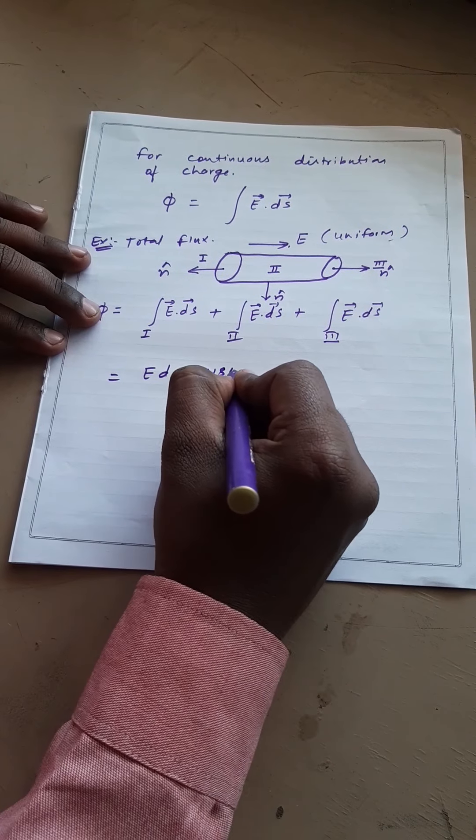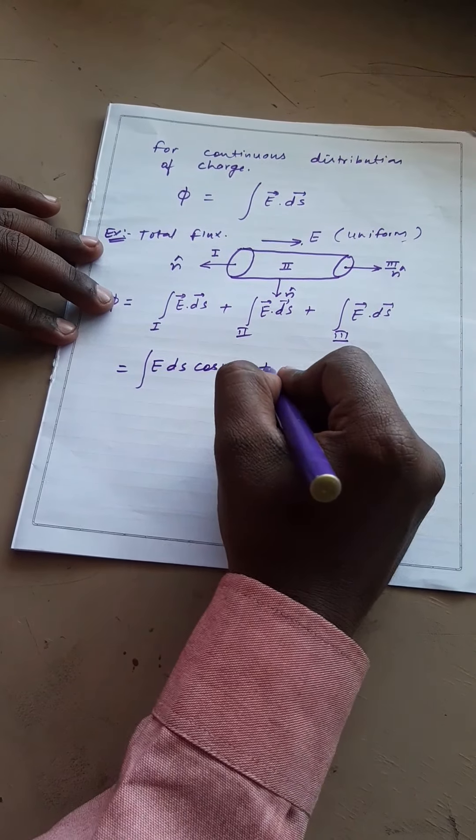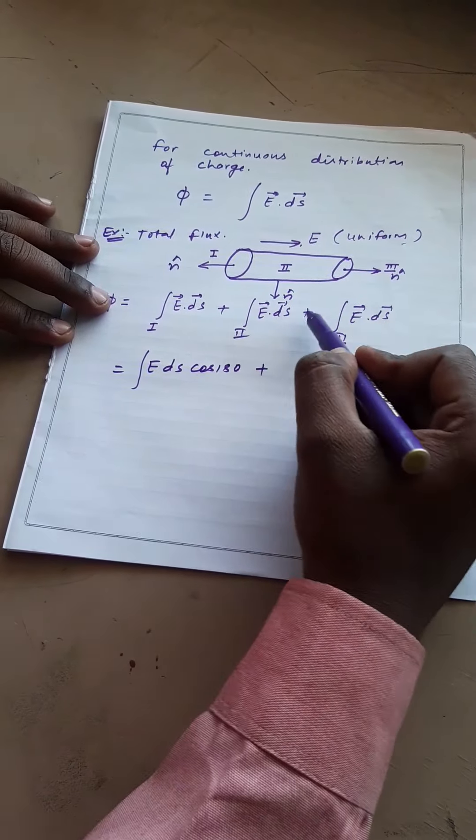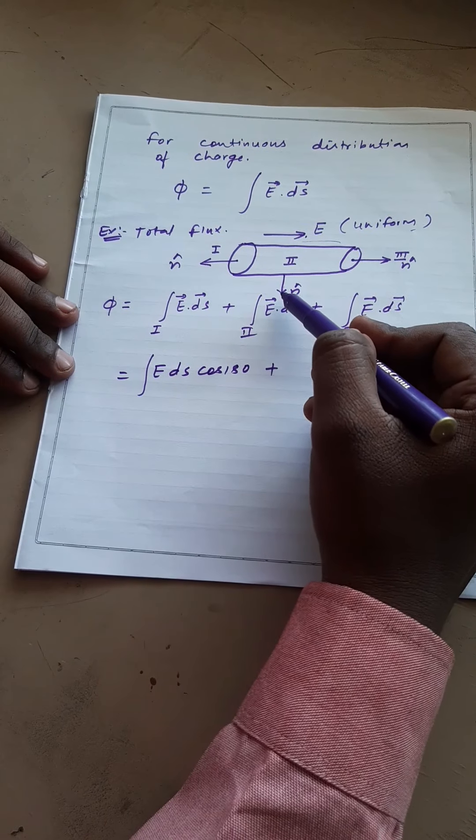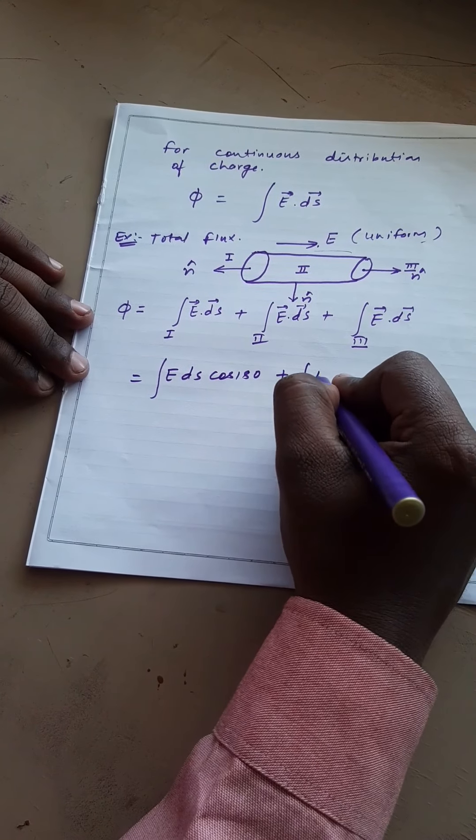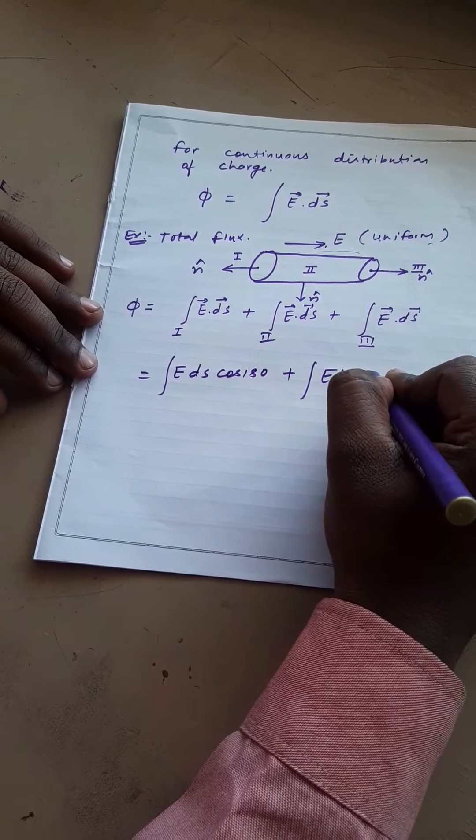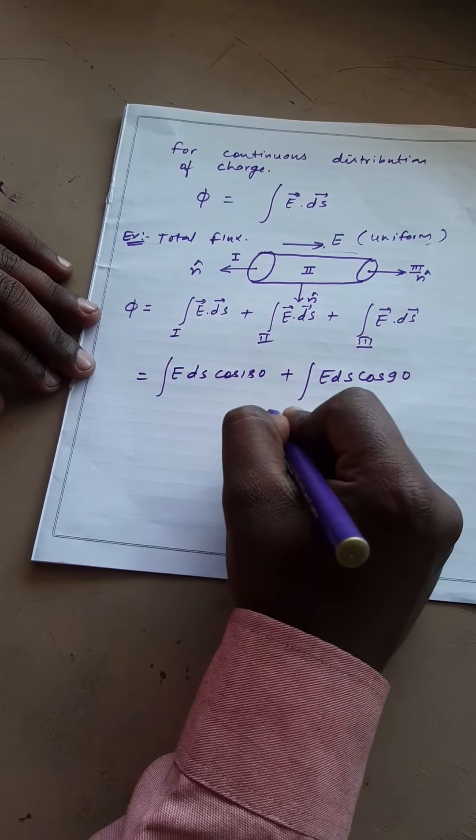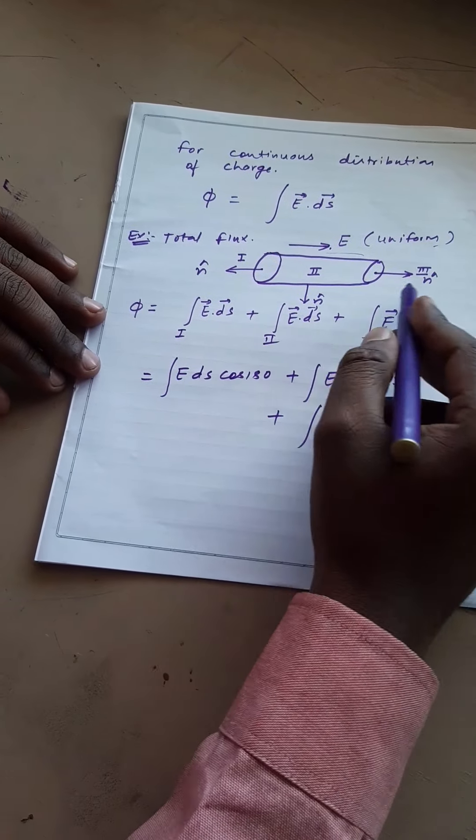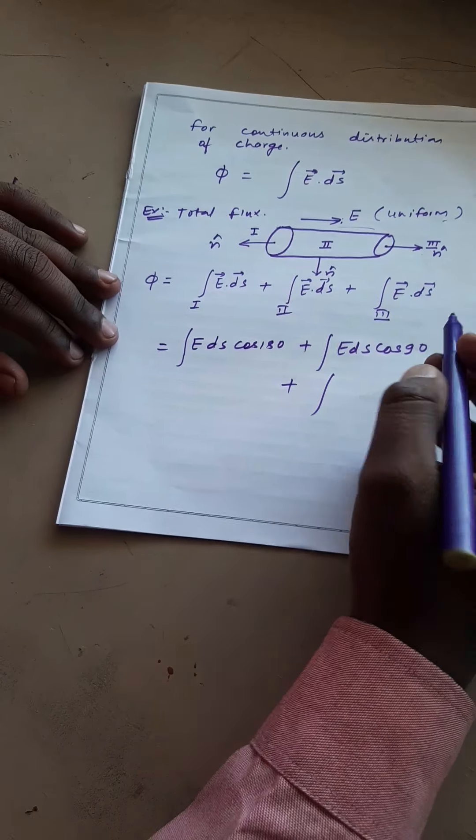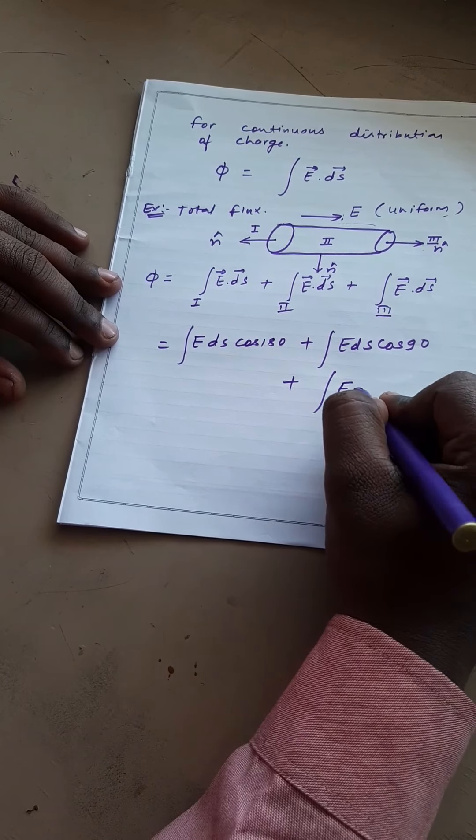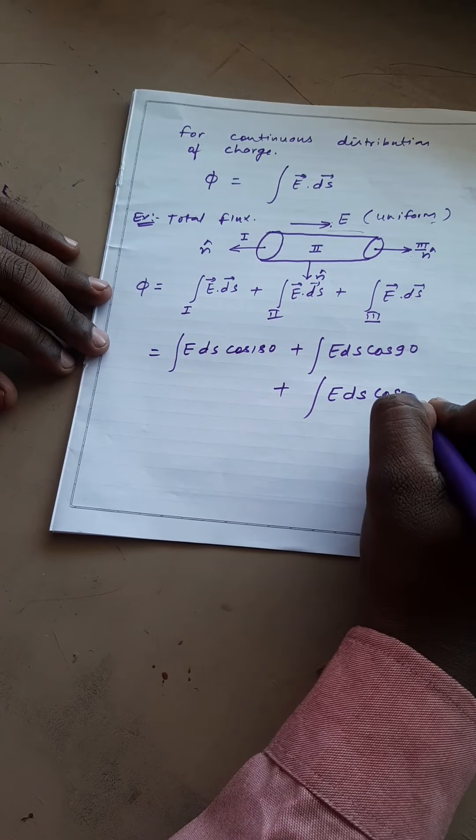second region electric field and normal vector are mutually perpendicular. So we can write E dot ds cos 90. In third region electric field and normal vector are in the same direction. So we can write E dot ds cos 0 degree.